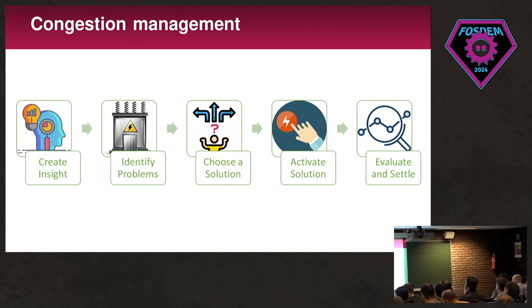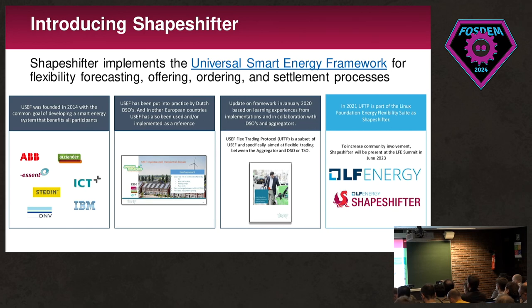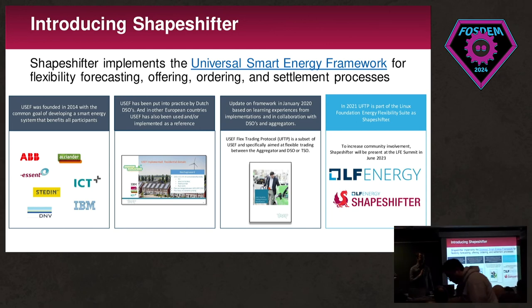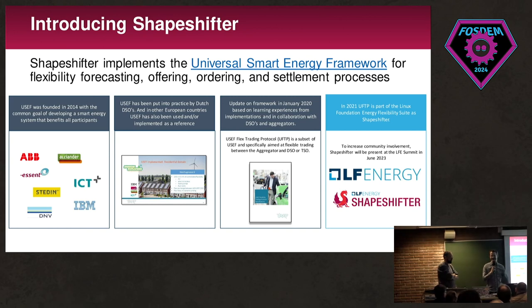Of course you need to activate a solution once you've chosen it. And the last part is interesting too: if companies say they've decreased their use, how do you actually verify that? Power usage is not stable anyway, so how do you know they've kept their promises? That's where Shapeshifter comes in. It was founded in 2014 by a couple of grid operators but also IT companies and consultants, because it was a very common problem in Europe — started in the Netherlands because we have a very stable power grid and want to keep it that way.